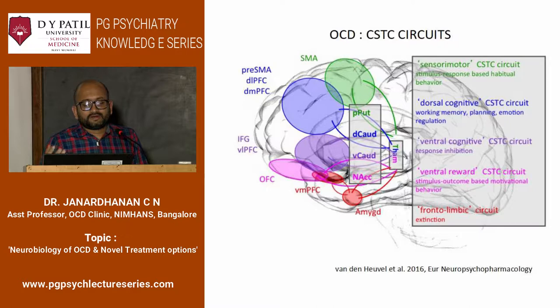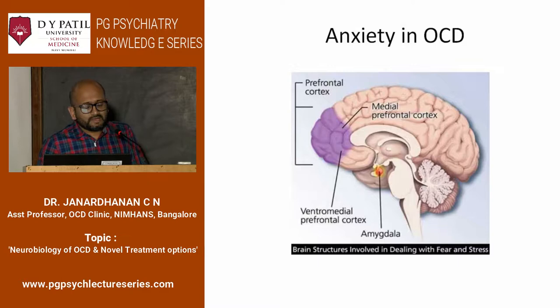Then you have the ventral reward circuitry, ventral cognitive, dorsal cognitive, and the fronto-limbic circuitry. In summary, this is the diagram which might help you remember the various circuit abnormalities in OCD.